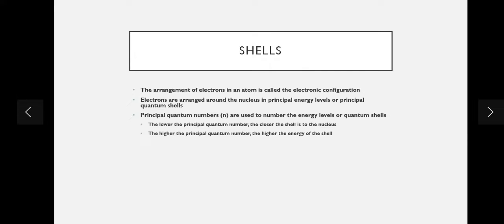There are two key points to be familiar with. First, the lower the principal quantum number, the closer the shell is to the nucleus. So n=1 is the first shell, closest to the nucleus; n=2 is the second shell, further away; n=3 is even further; and n=4 is even further still. Second, the higher the principal quantum number, the higher the energy of that shell.